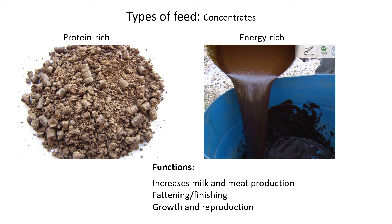Energy-rich concentrates have more sugar and carbohydrates to give energy to the animals. The main functions of concentrates generally are to increase milk and meat production — for milk in cows and meat generally in cattle and sheep. These concentrates are also given to fatten the animals when they're ready for slaughtering, which is referred to as fattening or finishing.